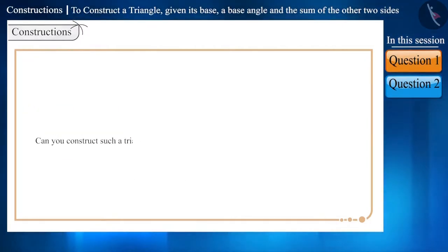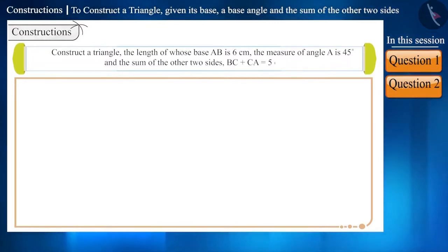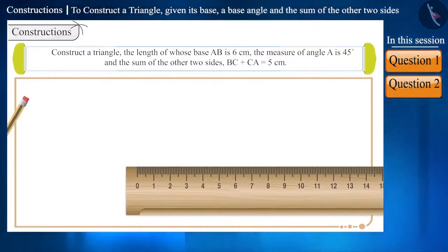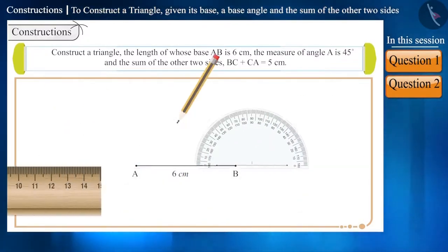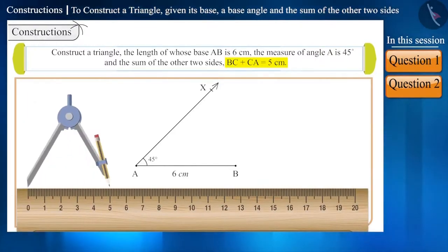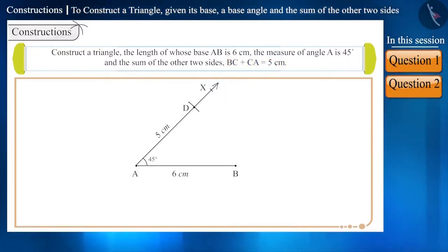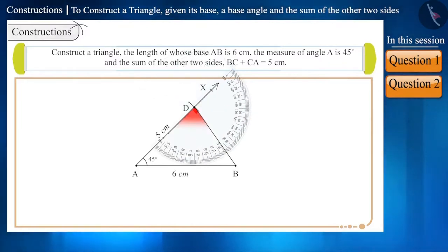Can you construct such a triangle where the sum of the two sides is smaller than the third side? Now let's look at this question: Construct a triangle, the length of whose base is 6 cm, the measure of angle A is 45 degrees, and the sum of the other two sides BC plus CA equals 5 cm. Step 1: With the help of a scale, draw a line segment AB of length 6 cm. Step 2: By making an angle of 45 degrees on line segment AB, draw a ray AX. Step 3: Cut a line segment equal to BC plus CA, that is of length 5 cm, on ray AX. Name the point of intersection as point D. Step 4: With the help of a scale, join point B and point D. Step 5: With the help of a protractor, measure angle BDA. Upon measuring, the measure of angle BDA is obtained as 81 degrees.